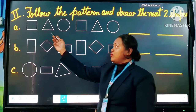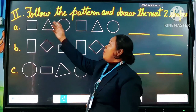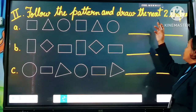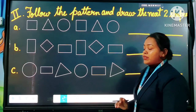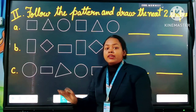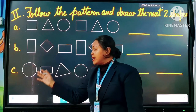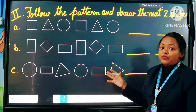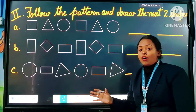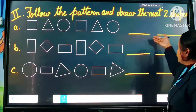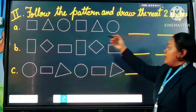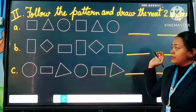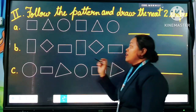Here is your second question: follow the pattern and draw the next two shapes. Three sets of patterns are given here. You have to draw the next two steps following the given pattern.